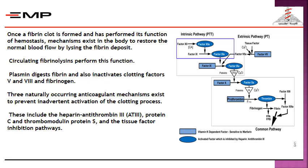Three naturally occurring anticoagulant mechanisms exist to prevent inadvertent activation of the clotting process. These include antithrombin 3 (heparin-antithrombin 3), protein C, protein S, and the tissue factor inhibition pathway.